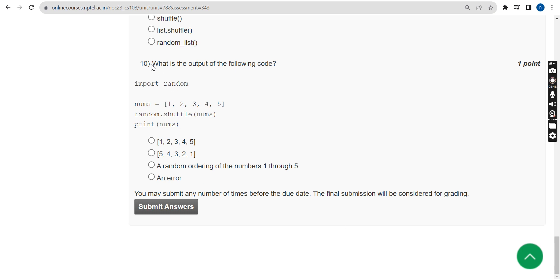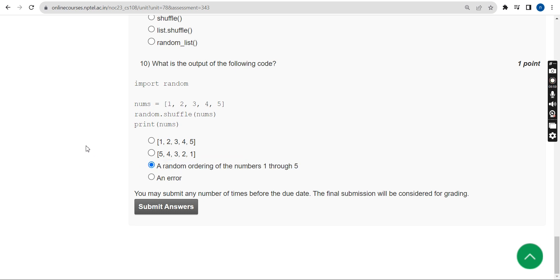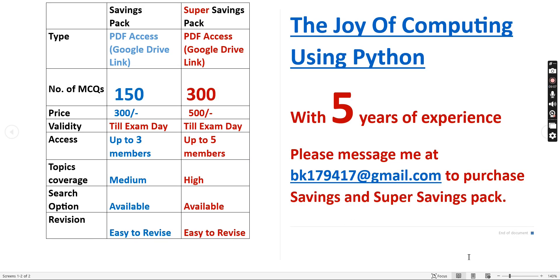For the tenth and final question, the answer is the third option — a random ordering of the numbers one through five. These are all the solutions for Week 4 assignment of 'The Joy of Computing Using Python.' Hope this video was helpful. Please subscribe, like, share within your WhatsApp groups, and consider purchasing the MCQ PDFs for exam preparation.